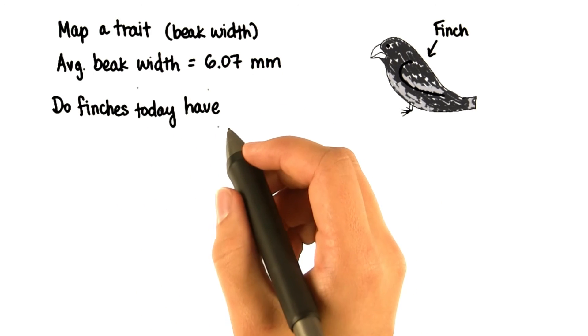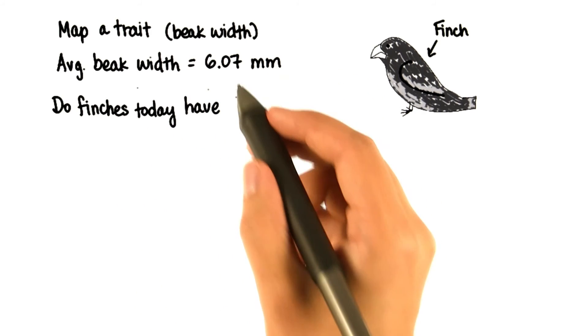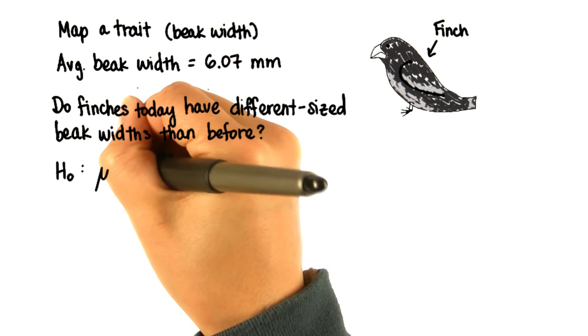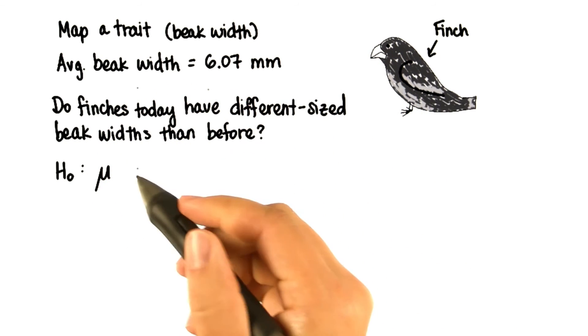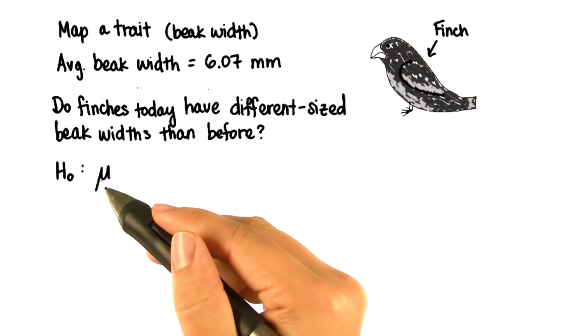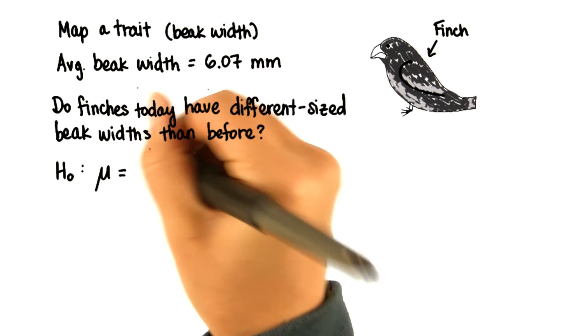We want to know, do finches today have beak widths that are different in size? That means our null hypothesis is that the population mean for finches today is equal to what they have been.